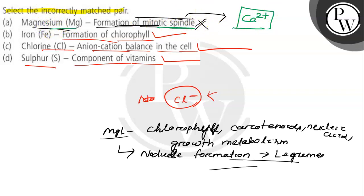So this is the correct answer for this question — the incorrect matched pair is option number A, where magnesium is incorrectly linked to mitotic spindle formation. I hope you understood it well. Best of luck.